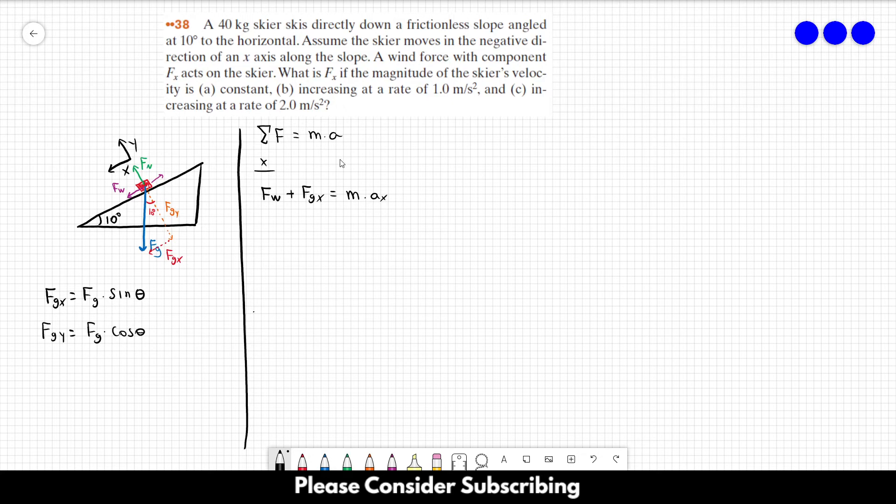So we have different accelerations and then we have to find the force of the wind. That it calls it Fx. So Fx is equal to Fw in this solution over here.